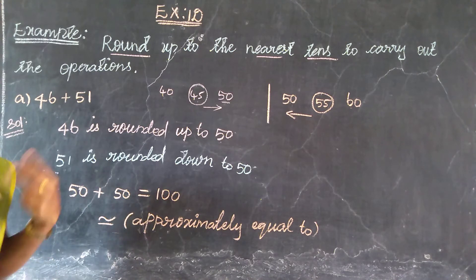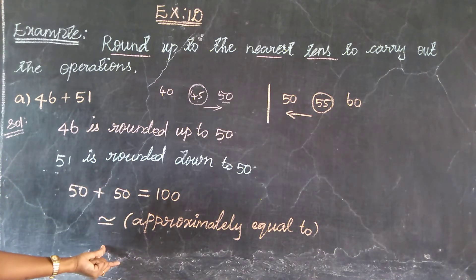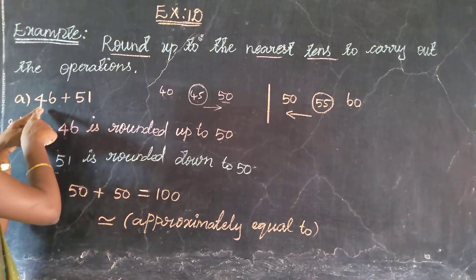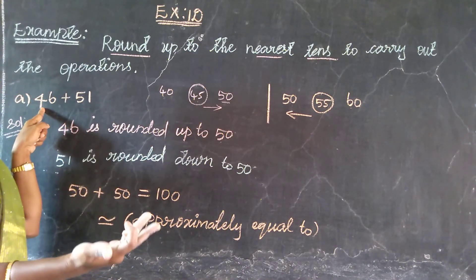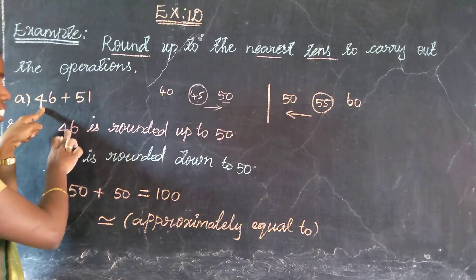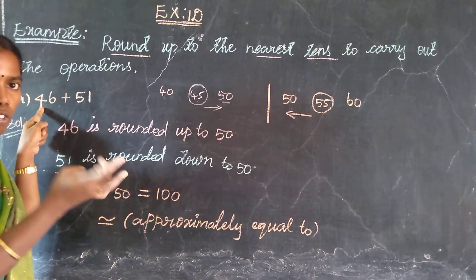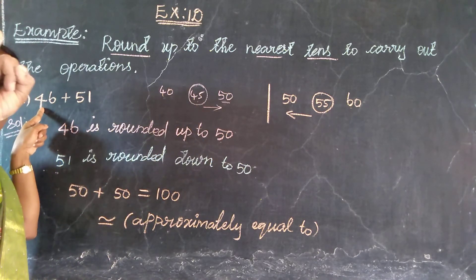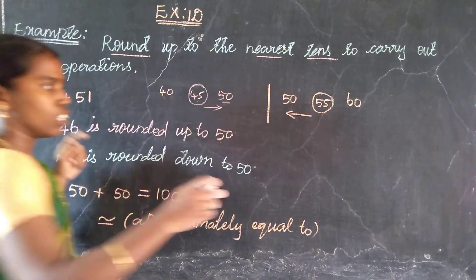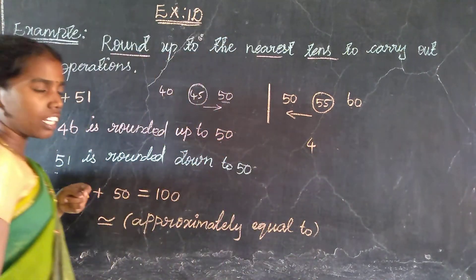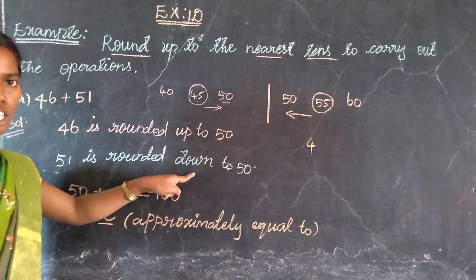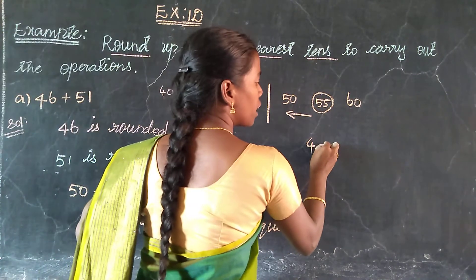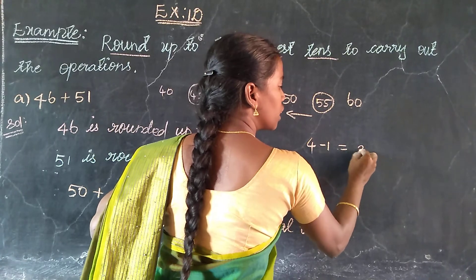This is the approximate value, not the exact value. 46 was increased by 4 values — 47, 48, 49, 50 — so 4 values were added. Then 51 was decreased by 1 value down to 50. So the total adjustment is plus 4 minus 1, which equals plus 3.